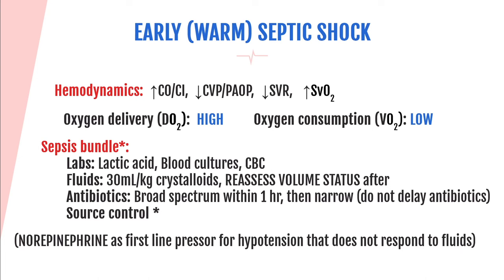The answer is B — start a dobutamine infusion. All values here are out of range, so we certainly need to do something. Looking at preload, the PAOP is already 18, meaning the patient is fluid overloaded since blood is backing up into the pulmonary system. Do not give them fluid — you need more squeeze and a diuretic.